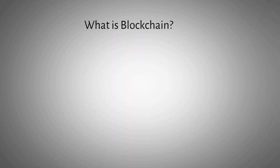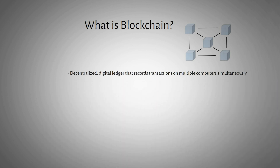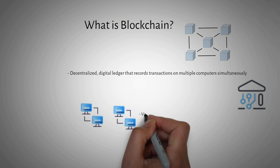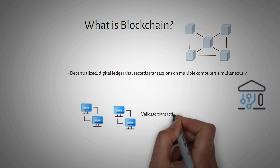Blockchain is a decentralized digital ledger that records transactions on multiple computers simultaneously. It does not require a central authority like a bank or government to maintain the ledger. This ledger is maintained by a network of computers that validate and record transactions.